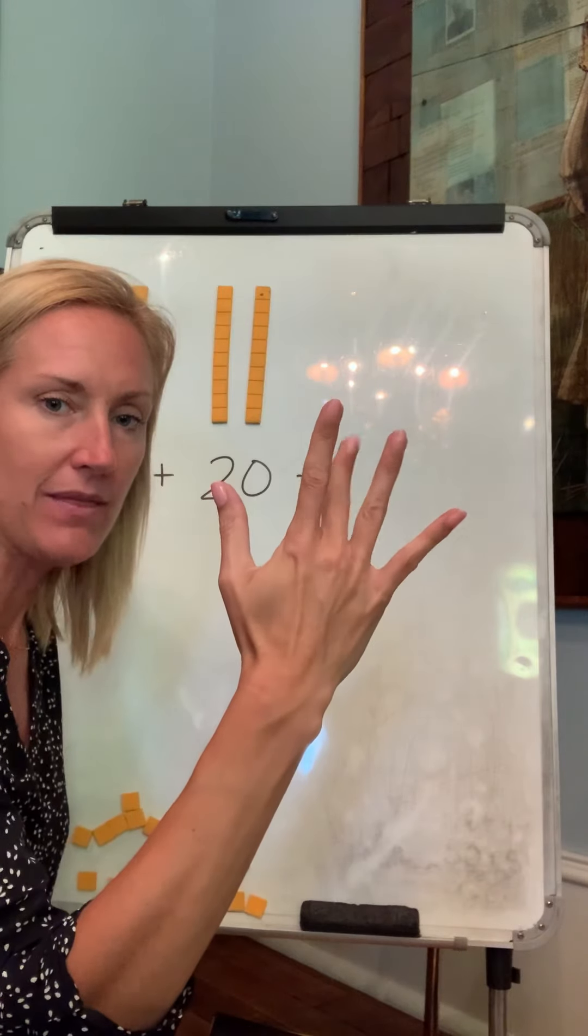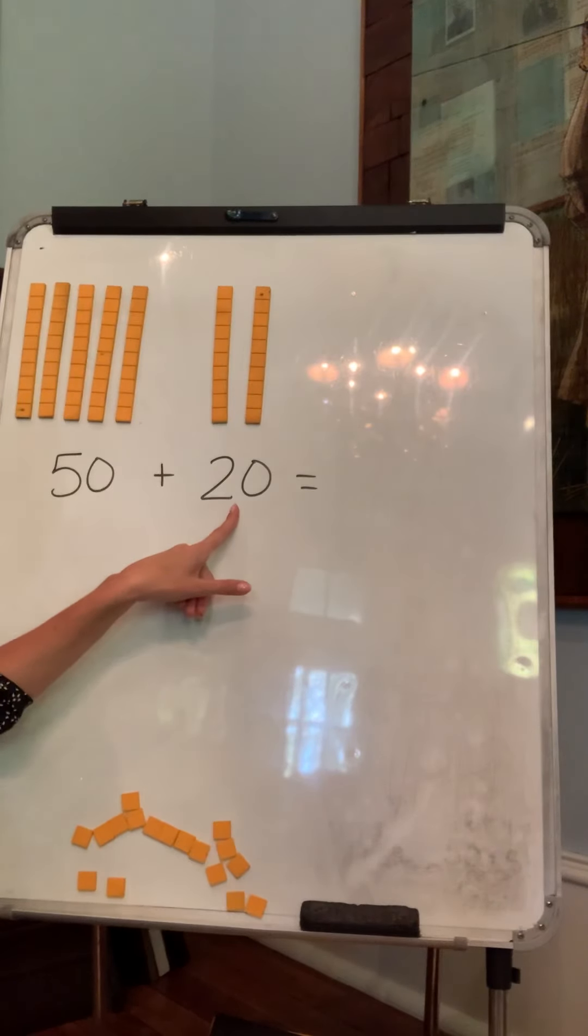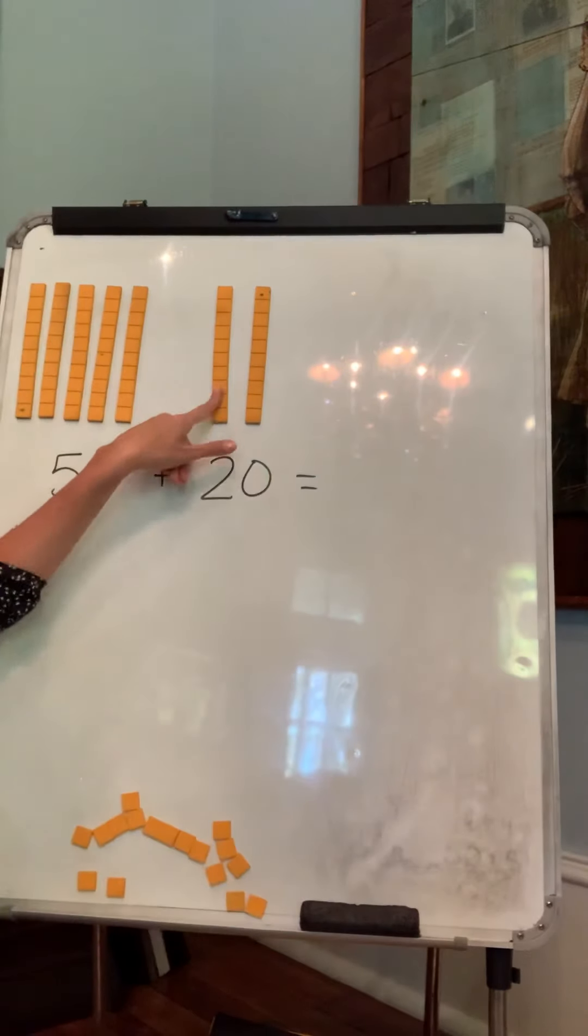10, 20, 30, 40, 50. So here are my five tens plus 20. 20 is the same as two tens. 10, 20. So I have two tens.